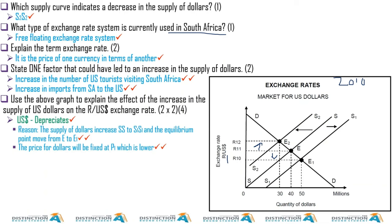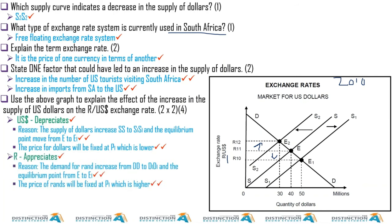The equilibrium point will be E1. Look — if it changes from 1 USD to 11 rand, to 1 USD to 10 rand, it means you now need fewer rands to buy the same dollar. So the rand is stronger and the dollar is weaker.